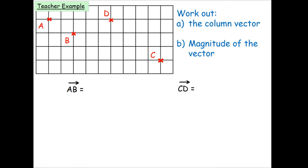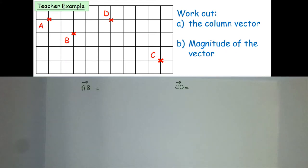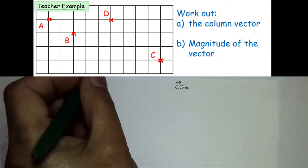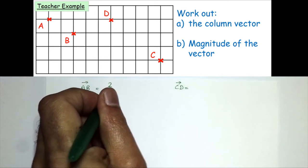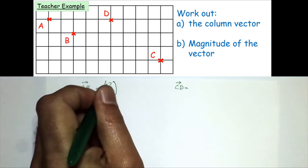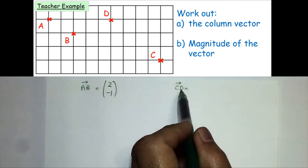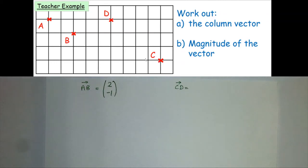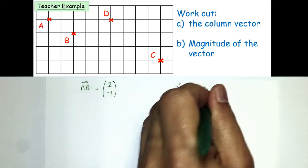In this example we have four points A, B, C, D, and we need to work out the column vector and the magnitude for two questions. For vector AB, travelling from A to B, I go two squares to the right and one square down, so the column vector is (2, -1). For vector CD, starting from C, I go four squares to the left and three squares up, so that is (-4, 3).